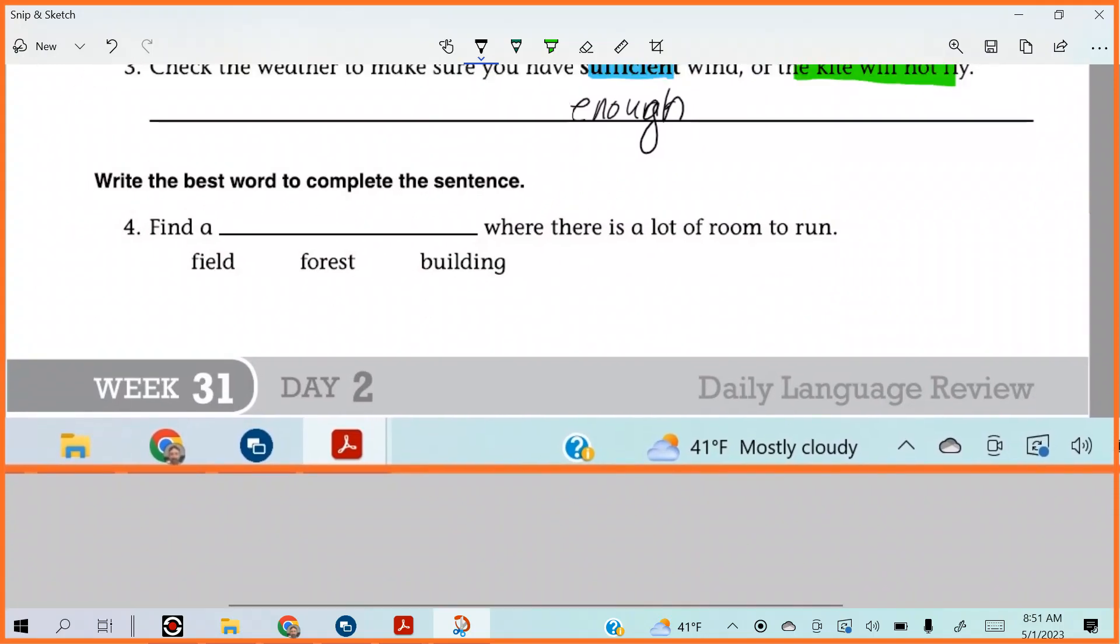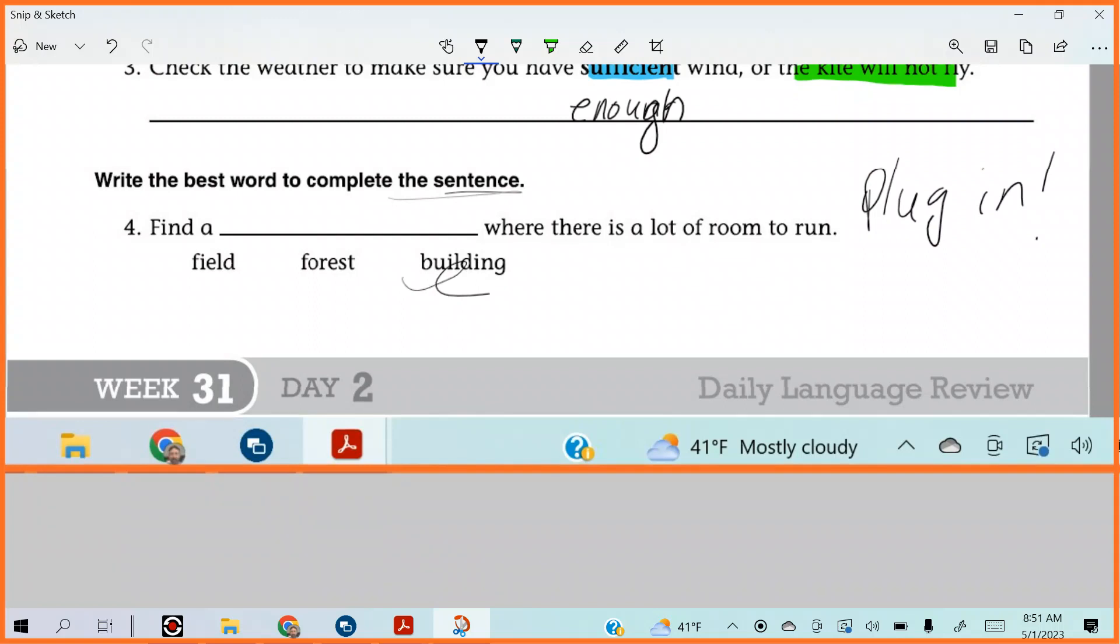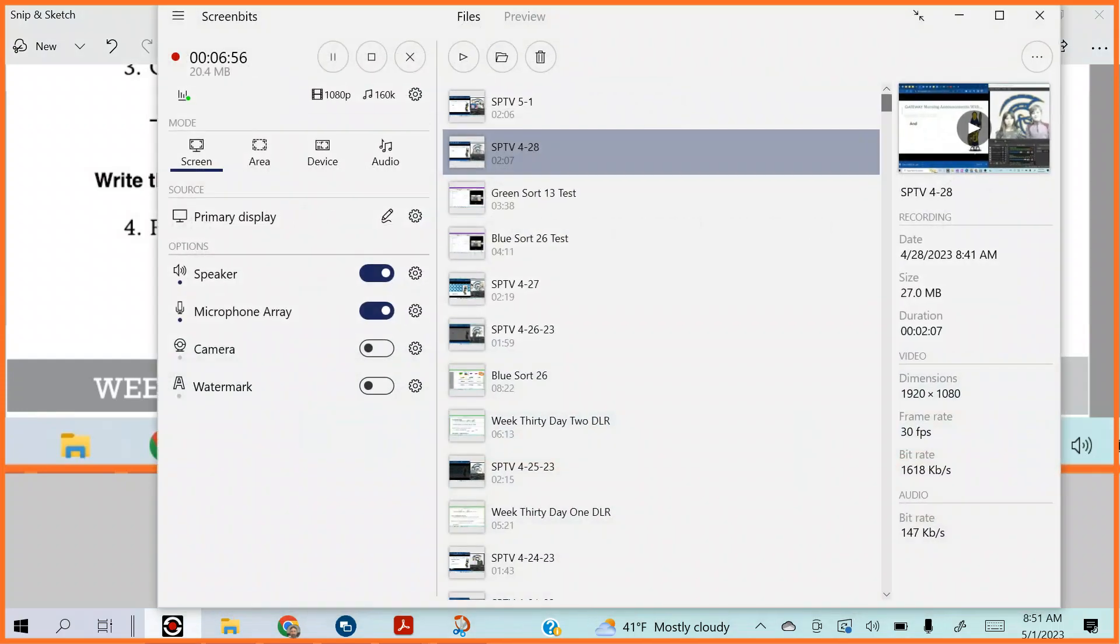How about this one? Write the best word to complete the sentence. We'll use the plug-in method. Find a blank where there is a lot of room to run. A building? Do we want a building to fly a kite in? So, let's eliminate that. Forest? Why doesn't that make sense? You're going to be like Charlie Brown with all the kites in the tree, right? Or you're going to hit a tree. Field makes sense. F-I-E-L-D. All right. There you have it, you guys. Week 31. DLR day one in the books. Today we're out.